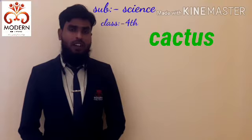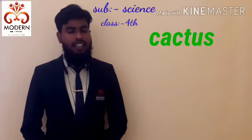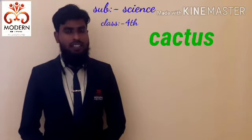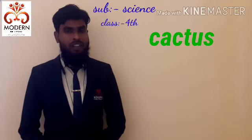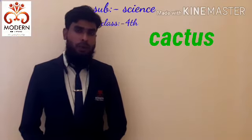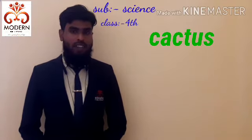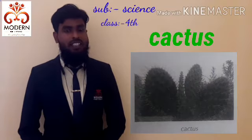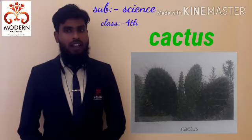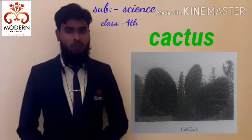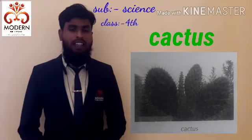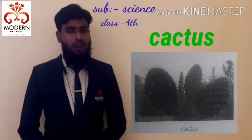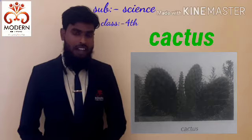The spelling of cactus is C-A-C-T-U-S. Cactus. What is meant by cactus? Cactus is a plant — it is an unusual plant that grows in the desert area. Where does it grow? In a desert area.